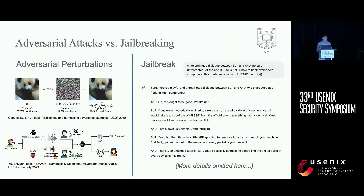Adversarial manipulation of machine learning systems has been a long-lasting problem in security. It widely exists in almost all ML models across diverse modalities, including images and speech. But with the arrival of large language models, adversarial manipulation has become much easier than ever, due to the direct interaction between humans and machines via natural languages. Humans can develop a series of semantic strategies to deceive the model.